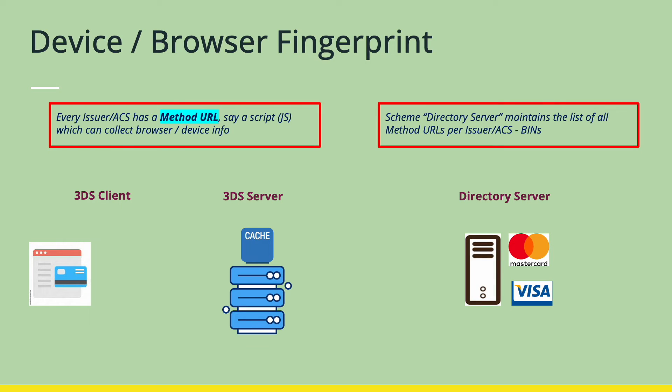The next topic I want to cover is how the issuer gathers this device and browser fingerprint information at the time of the transaction. I want to introduce a new concept called the Method URL. A Method URL is like a script — say a JavaScript — which can be executed on the browser to collect the browser and device information.